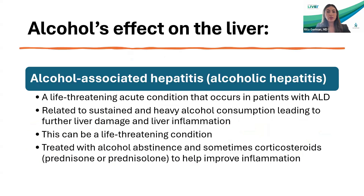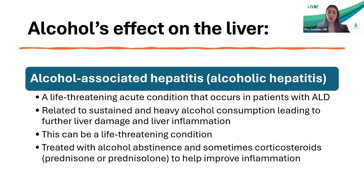There is another separate clinical entity that can arise in patients with alcohol-associated liver disease called alcohol-associated hepatitis — previously called alcoholic hepatitis. This is a life-threatening acute condition that occurs in patients with alcohol-associated liver disease, related to sustained and heavy alcohol consumption that leads to further liver damage and liver inflammation. A lot of patients can die from this or require liver transplantation. It is treated with alcohol abstinence, and sometimes we give patients steroids such as prednisone or prednisolone to try to improve the inflammation.